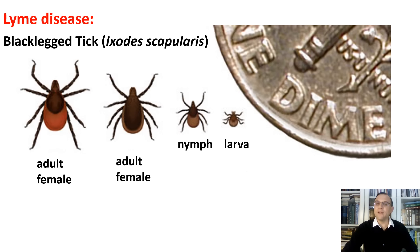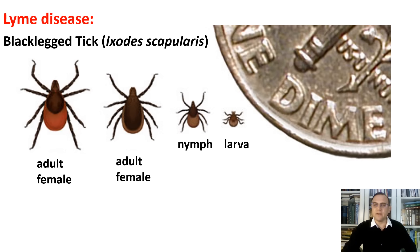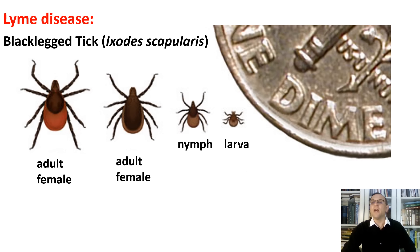For example, Lyme disease — you cannot catch it from someone you're hanging out with or passing in the street. It comes from the bite of an infected tick. According to the CDC, there is no evidence that Lyme disease is transmitted from person to person through touching, kissing, or having sex with a person who has Lyme disease, though untreated Lyme disease during pregnancy can lead to infection of the placenta.